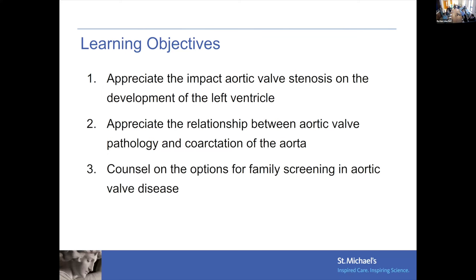From a research perspective, the eNOS knockout mouse develops bicuspid aortic valve almost 100 percent of the time with left-right fusion, but we still haven't been able to figure out why. It's the only good animal model, though these mice don't develop aortic dilatation. It's been an area we've tried to study, but it's been difficult to simulate what happens in humans — probably because of different flow dynamics, which is why you don't get aneurysms in the mouse model.